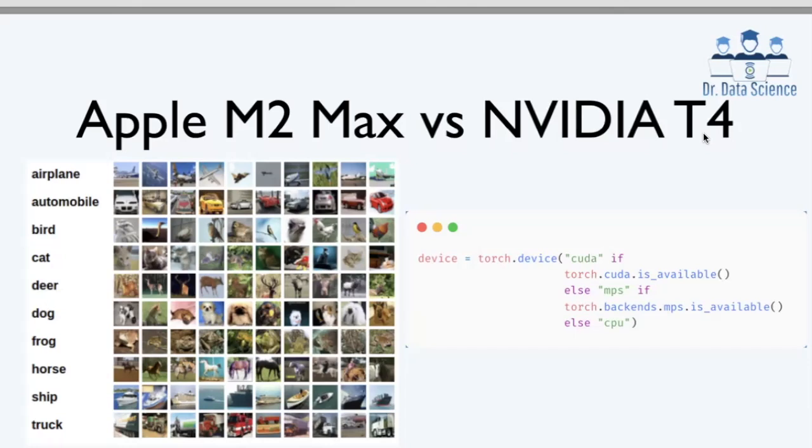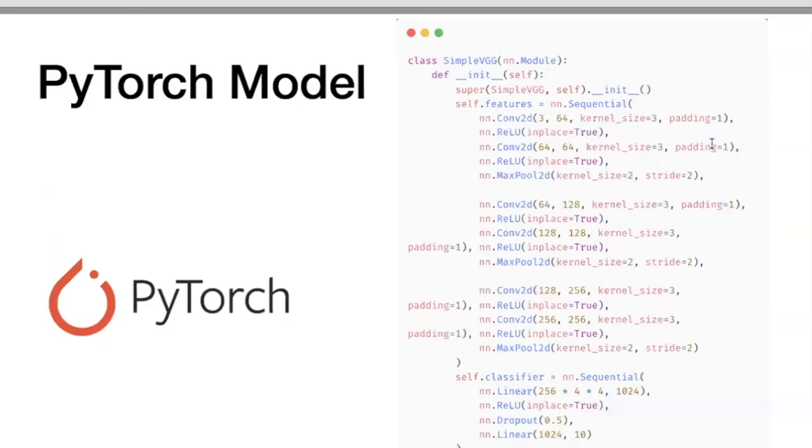To train on this, I created a VGG-like model with a straightforward architecture. It features a series of convolutional layers with 64, 128, and 256 filters, each followed by ReLU activations and max pooling layers. After the convolutional block, the model ends with a fully connected classifier that brings the image features down to 10 output classes.